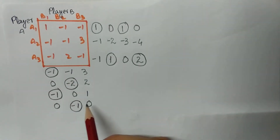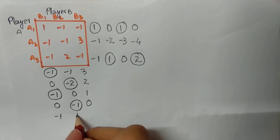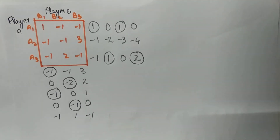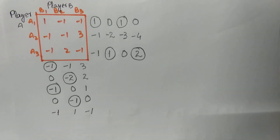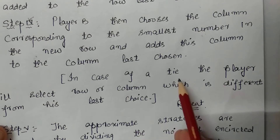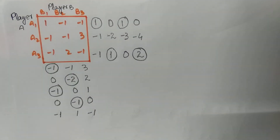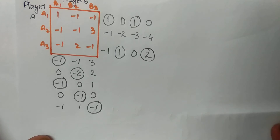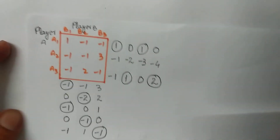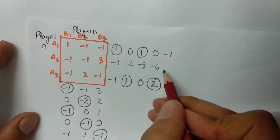Player A chooses that row and adds: −1 + 0 = −1, 2 + (−1) = 1, −1 + 0 = −1. Now there is a tie — minus one, minus one, minus one are all the lowest numbers. In case of a tie, the player selects the row or column different from the last choice. Since no element has been encircled from one particular column, we encircle minus one there. Player B selects and adds: −1 + 0 = −1, 3 + (−4) = −1.